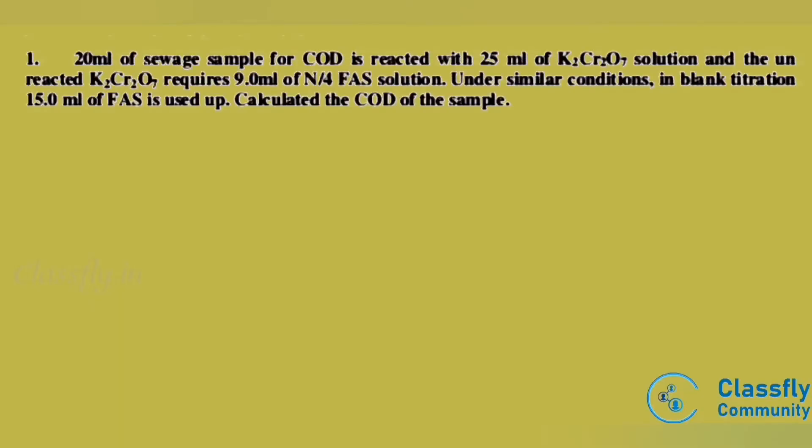First problem: 20 ml of a sewage sample for COD is reacted with 25 ml of K2Cr2O7 solution, and the unreacted K2Cr2O7 requires 9 ml of N/4 FAS solution. Under similar conditions, in the blank titration, 15 ml of FAS is used up. Calculate the COD of the sample.